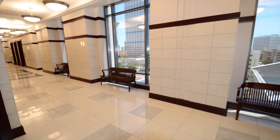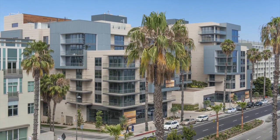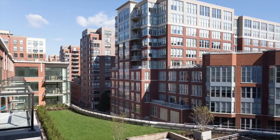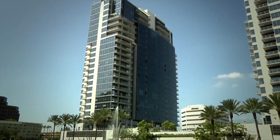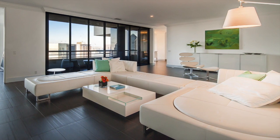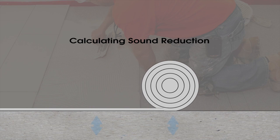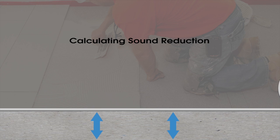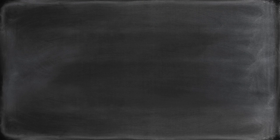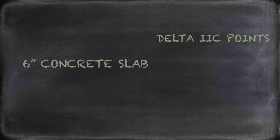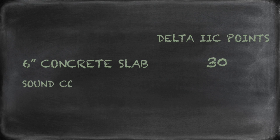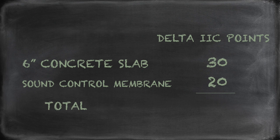Tip number two: always check the membrane's delta IIC rating. Building codes typically call for a minimum IIC rating of 50 in apartments, condos, and hotels. This rating can usually be achieved by installing a sound reduction membrane between the concrete or wood substrate and the floor covering. The floor assembly's total IIC can be estimated based on the depth of the slab and the contribution of the membrane. For example, a six-inch concrete slab typically supplies 30 points toward the total IIC. Sound control membranes will contribute 10 or more points, so by adding a membrane rated for 20 delta points, you should be able to provide a total IIC of 50 for code compliance.